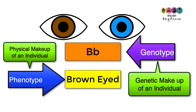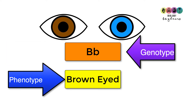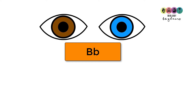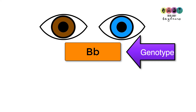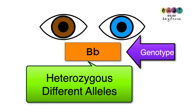If you're asked to define genotype, you state it's the genetic makeup of an individual. If you're asked to define phenotype, you state it's the physical makeup of an individual, and you'll use both when doing genetic crosses. This individual has two different alleles: the dominant big B for brown eyes and the recessive small b for blue eyes. Their genotype is big B, little b, and because they have two different alleles, we describe this genotype as being heterozygous.